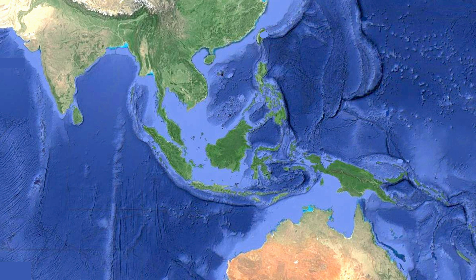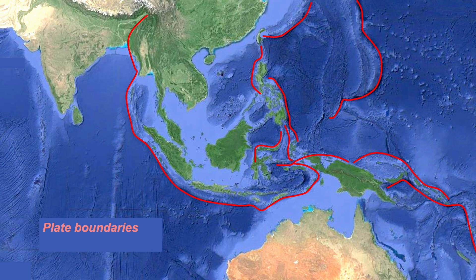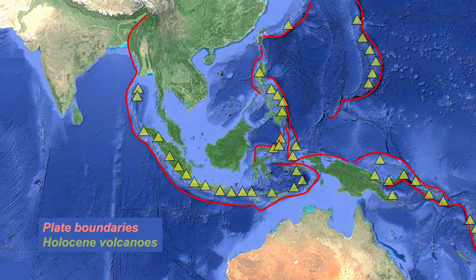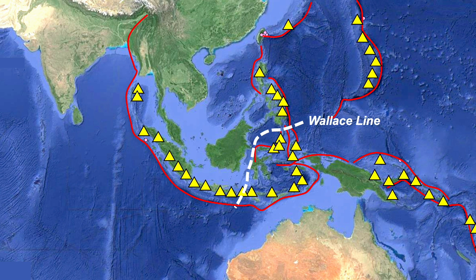East Asia is a network of tectonic lines — plate boundaries that control the location of major geological features, including the volcanic arcs. But there are other lines here too, features that have no tectonic significance. They're related to biology. But actually, do they have tectonic controls too?